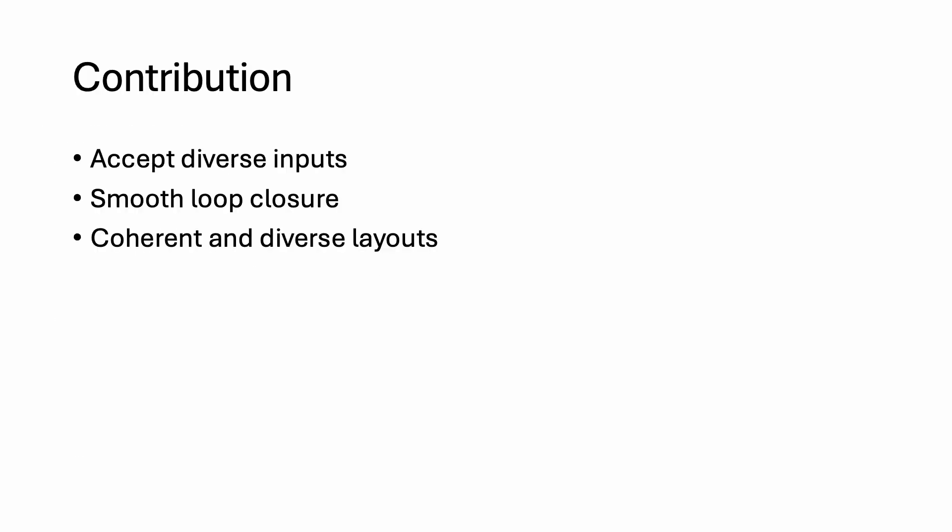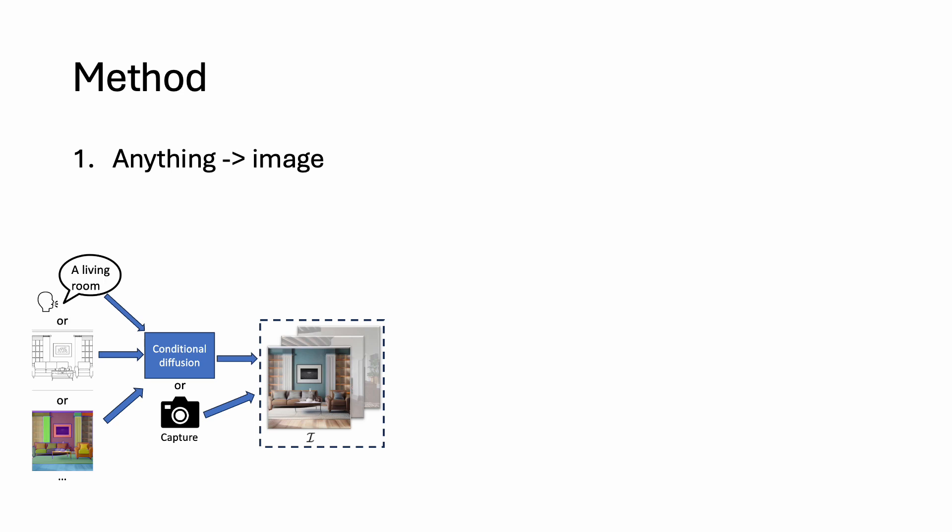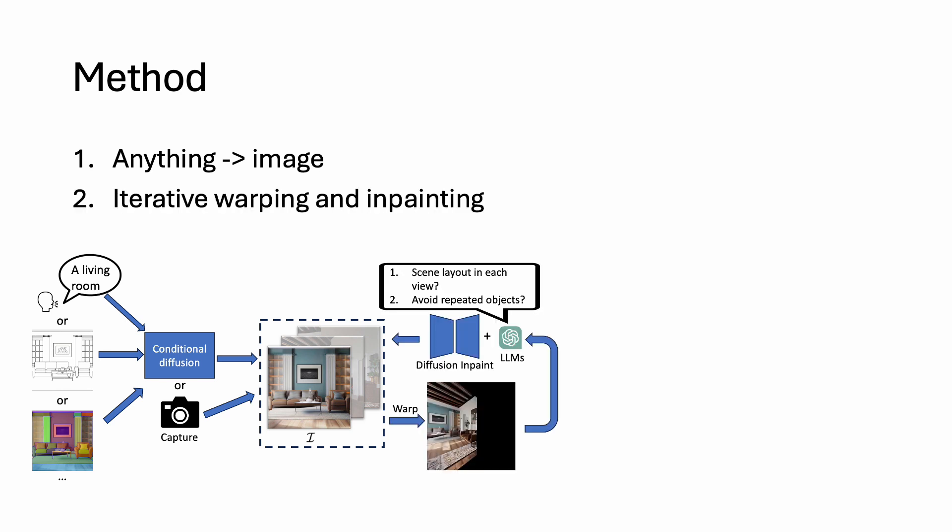To address these problems, we propose a new method that can accept various types of inputs, smoothly close the 360-degree loop, and generate coherent and diverse scene layouts. To handle arbitrary input modalities, our method leverages matured conditional diffusion models to generate a perspective image if the input is not already one. Then our method performs iterative warping and inpainting. The warping step warps existing views to a novel view, where the black region represents the missing pixels.